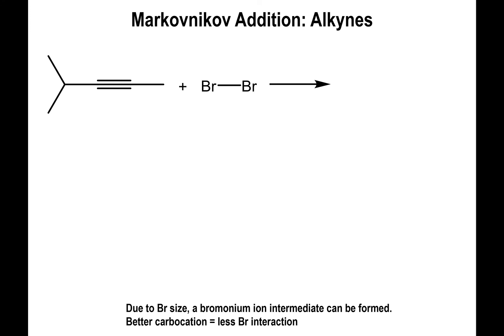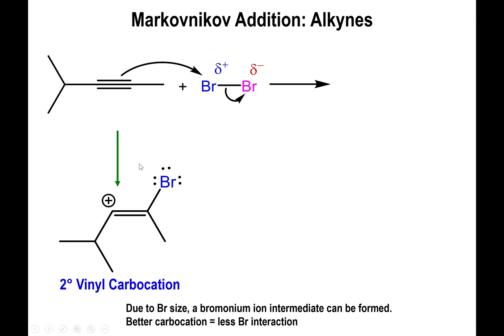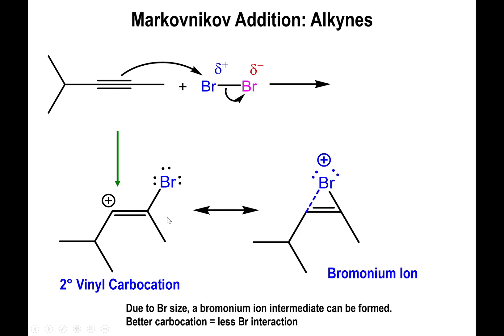Now for alkynes: when dibromine reacts with an alkyne, a similar process takes place. The alkyne attacks dibromine via bond polarization, kicking out bromide. What would initially be a very unstable vinyl carbocation on the double bond is instead stabilized because bromine is large enough to sit on the entire alkyne, forming a new bromonium ion — this time part of a bromocyclopropene structure.